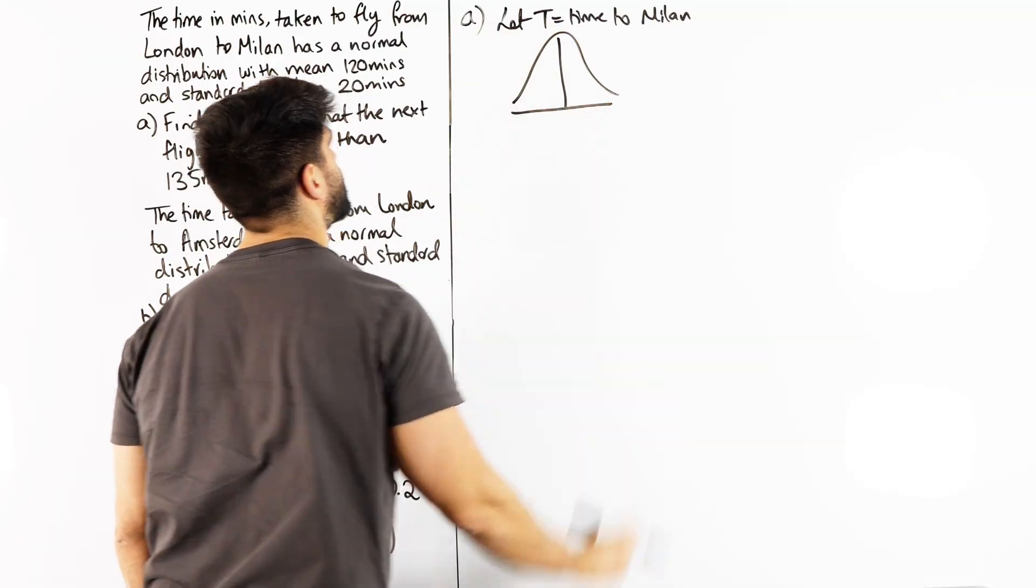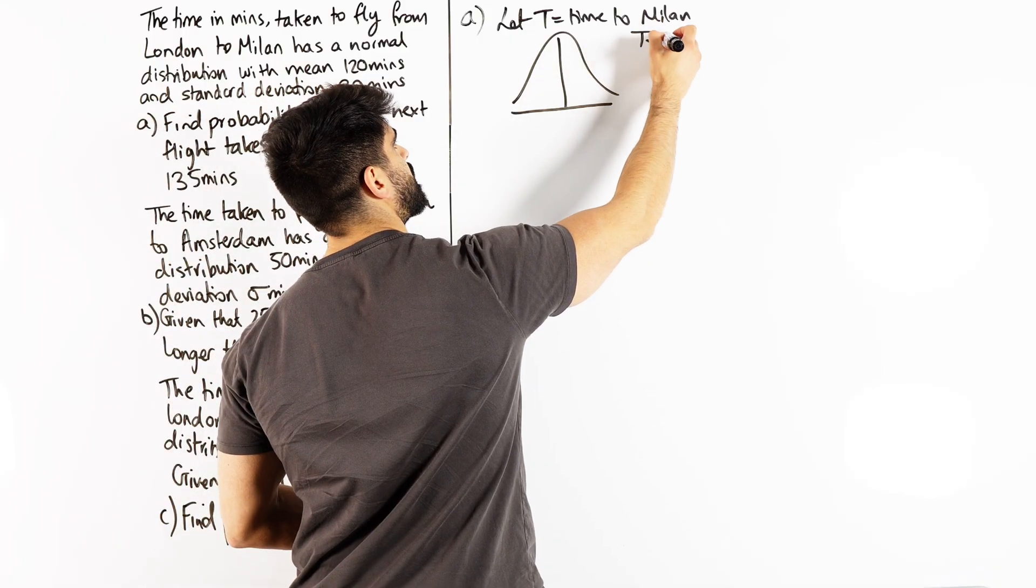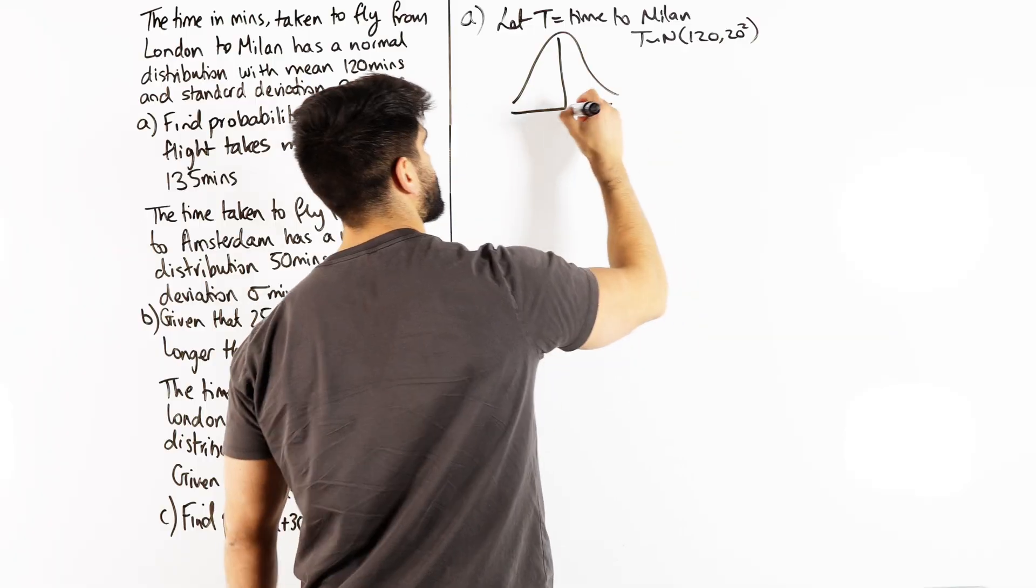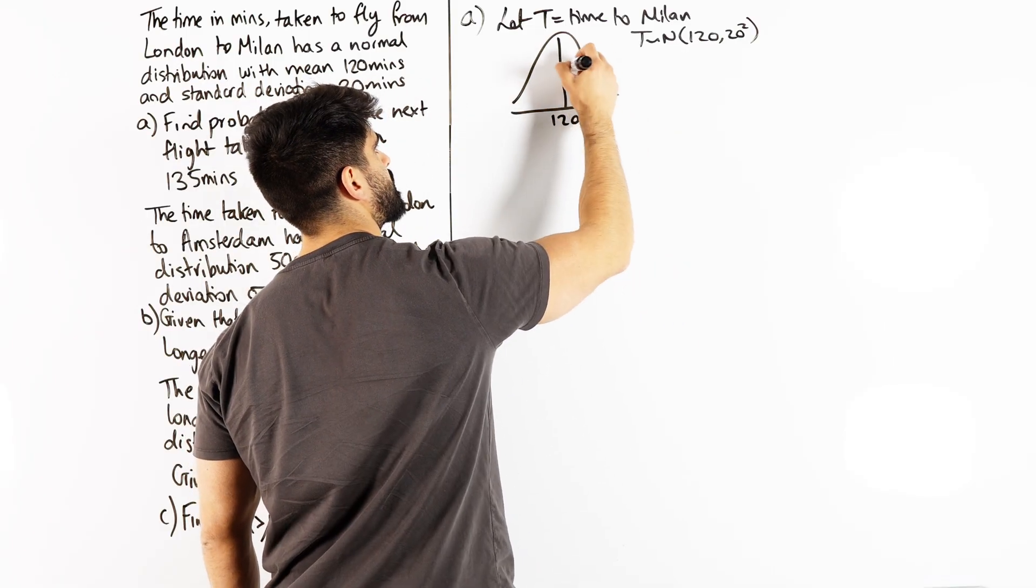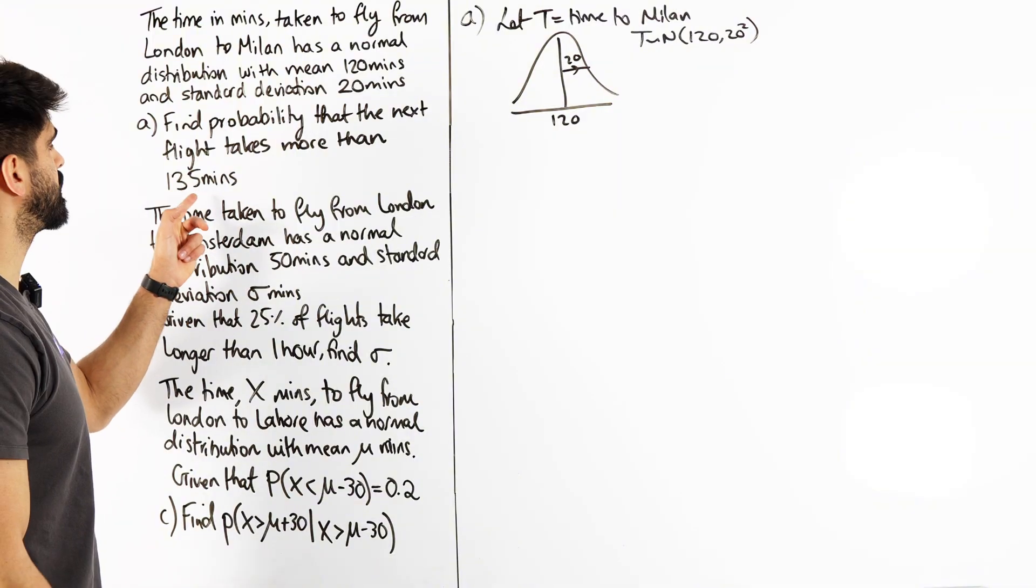What I always tell you guys, do a quick sketch. So we have, I mean you could say as well, my bad, t is normally distributed N(120, 20²). So we have 120 and the standard deviation is 20. Find the probability of greater than 135.